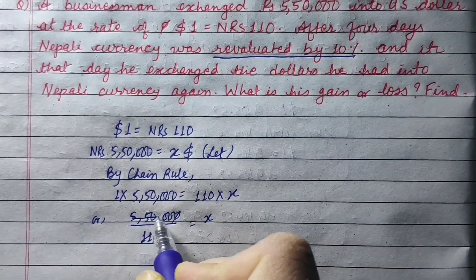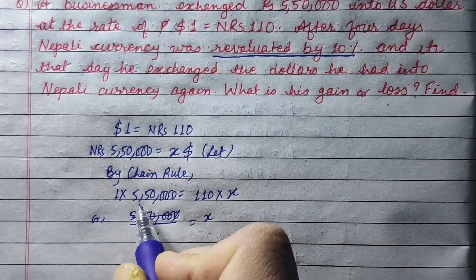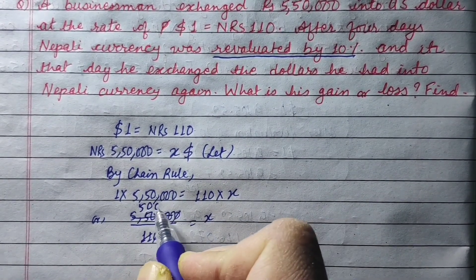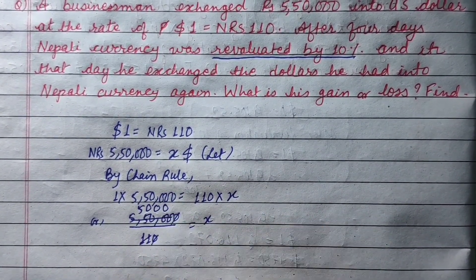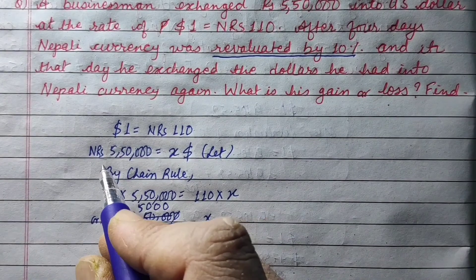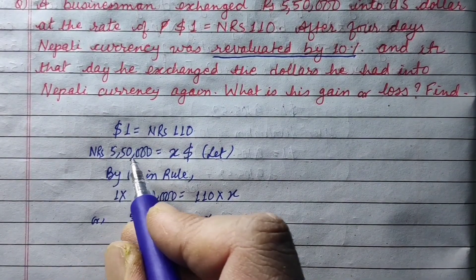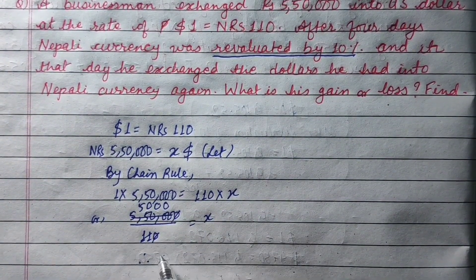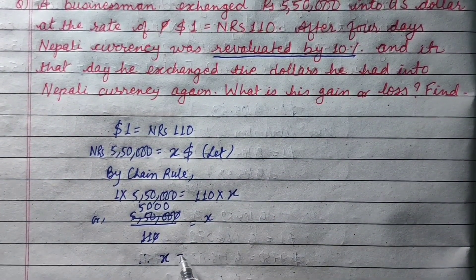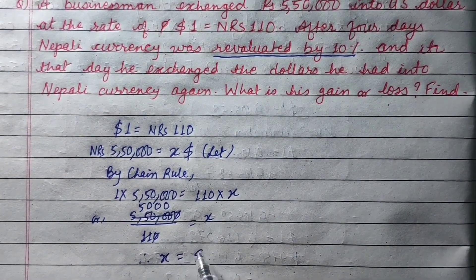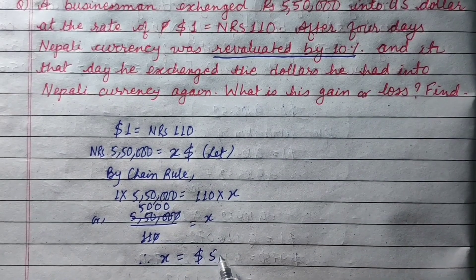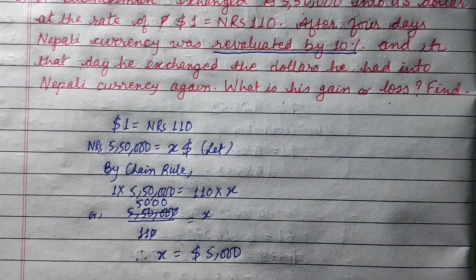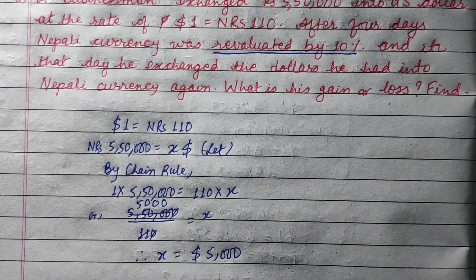So we get 5,000 dollars. He converted 5,50,000 NRS into 5,000 US dollars.